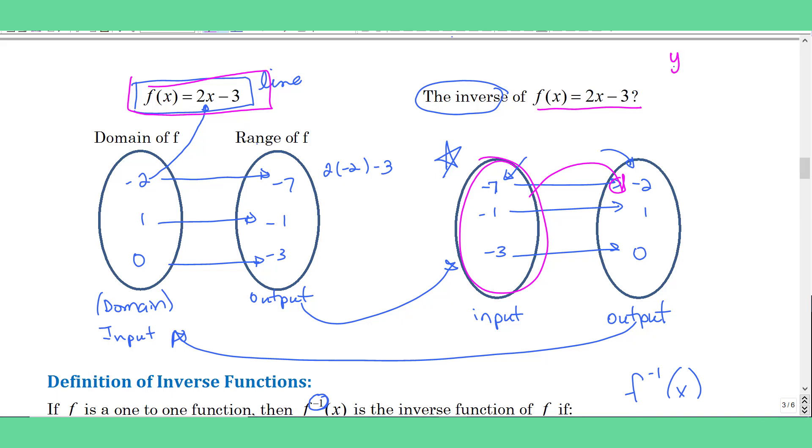So if we go through those steps, just to practice, I would add 3 and divide by 2. So my inverse function would be x plus 3 divided by 2. So let's just see if it works. If I put in negative 7 for x, negative 7 plus 3 divided by 2, sure enough, is negative 2.